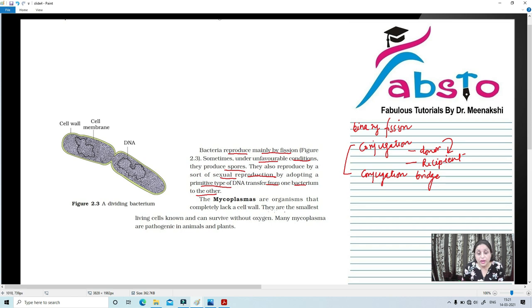Again, mycoplasmas are another group of bacteria which completely lack a cell wall. In fact, these are the smallest of all bacteria and they completely lack a cell wall. They are the smallest of all the living cells known and they can even survive without oxygen. That means those which can survive without oxygen are known as anaerobic type of bacteria. Many mycoplasmas are pathogenic in case of animals and plants. So, mycoplasmas are pathogenic in case of animals and plants.